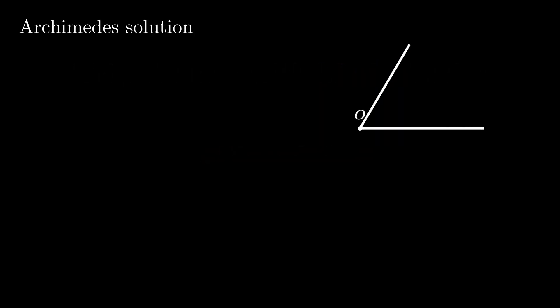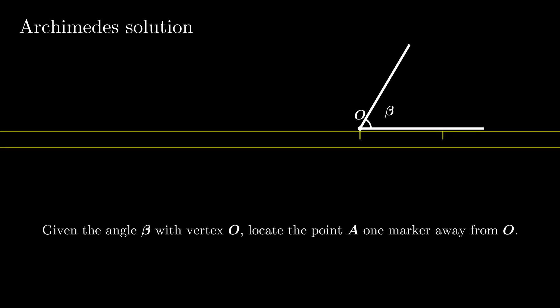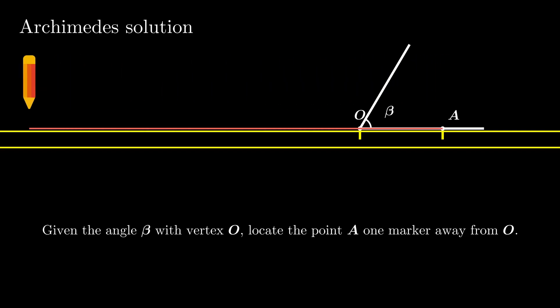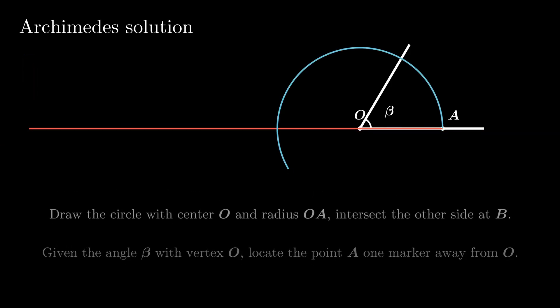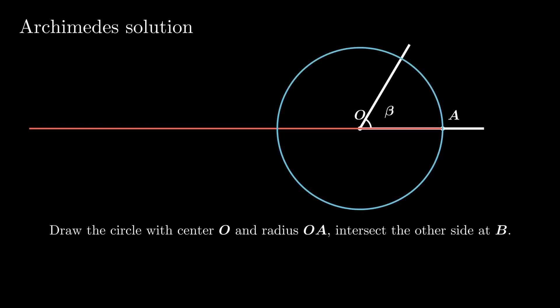Given an angle with vertex O, we first locate the point A one scale away from O. Then we extend the OA with our ruler and draw the circle with center O, radius OA, intersecting the other side at the point B.